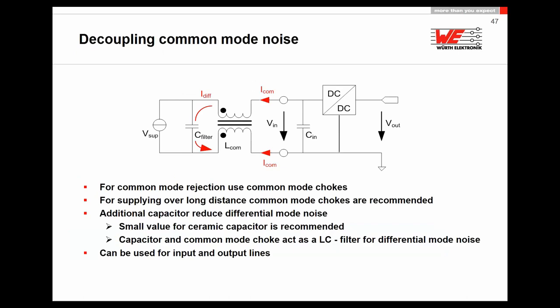For common mode noise problems, all the filters described so far address differential noise. For common mode noise, I suggest using a sector-wound common mode choke, which has good leakage inductance. Use two capacitors — for example 10 nF and 100 nF — and with the leakage inductance you get differential filtering, while the common mode choke itself provides filtering for common mode noise. Avoid ground shifting or short-circuiting the choke winding.